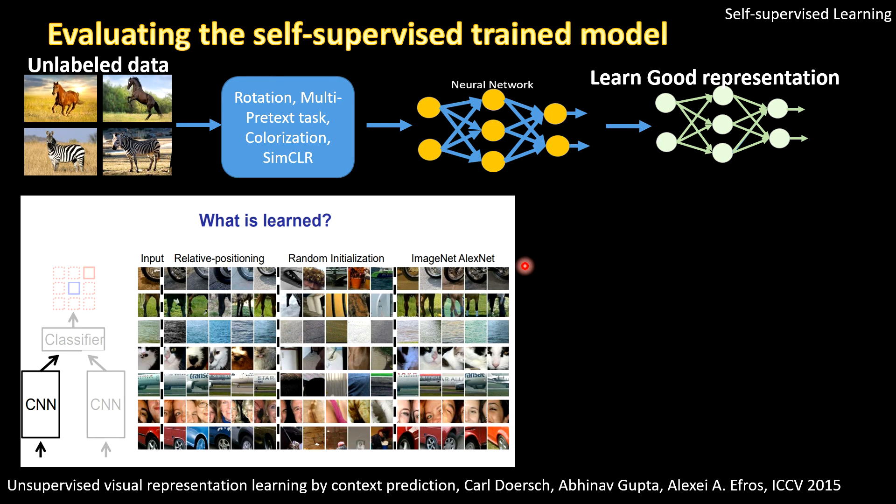So what we discussed previously was one way to visually evaluate your self-supervised trained model is suppose you have your representation learning network which has learned representation. You have a query image and then you ask to retrieve similar images as per the query. So if it's a good learned representation, for example, if it's an ImageNet pre-trained model or a relative positioning pre-trained model, then similar images as per the query would be retrieved.